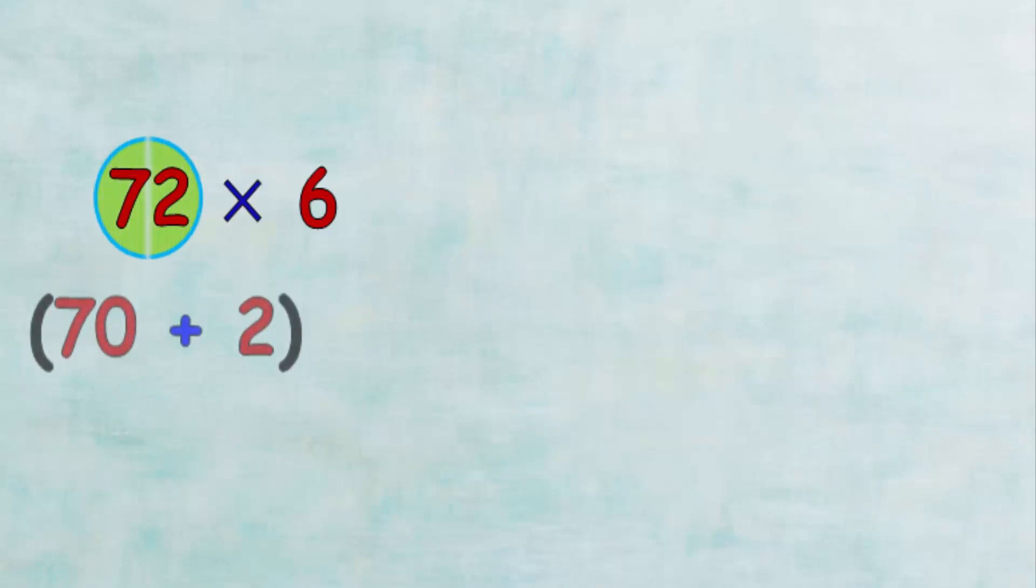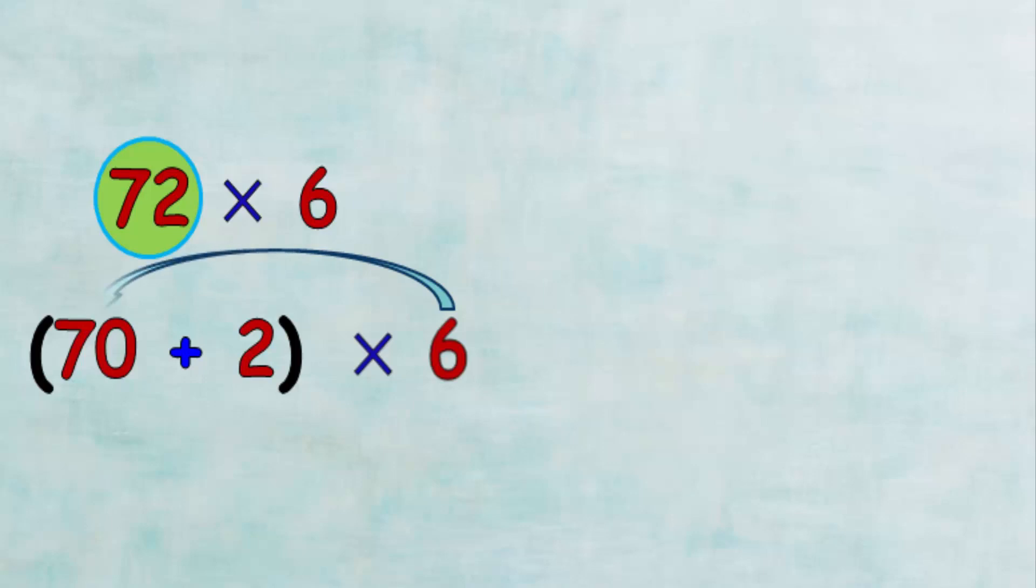When we expand 72, we have 70 plus 2. Then multiply 6 by 70, which equals 420.